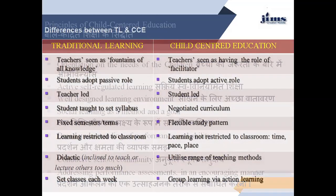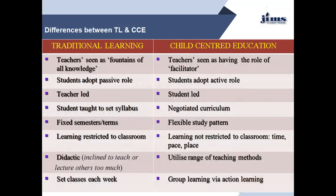The difference between traditional learning and child-centered education: In traditional learning, teachers are seen as the source of all knowledge. In child-centered education, teachers are seen as having the role of facilitator. In traditional learning, students adopt a passive role. In child-centered education, students adopt an active role. Traditional learning is teacher-led; child-centered education is student-led. In traditional learning, students are taught a set syllabus. In child-centered education, there is a negotiated curriculum. In traditional learning, there are fixed semesters or terms. In child-centered education, there is a flexible study pattern.